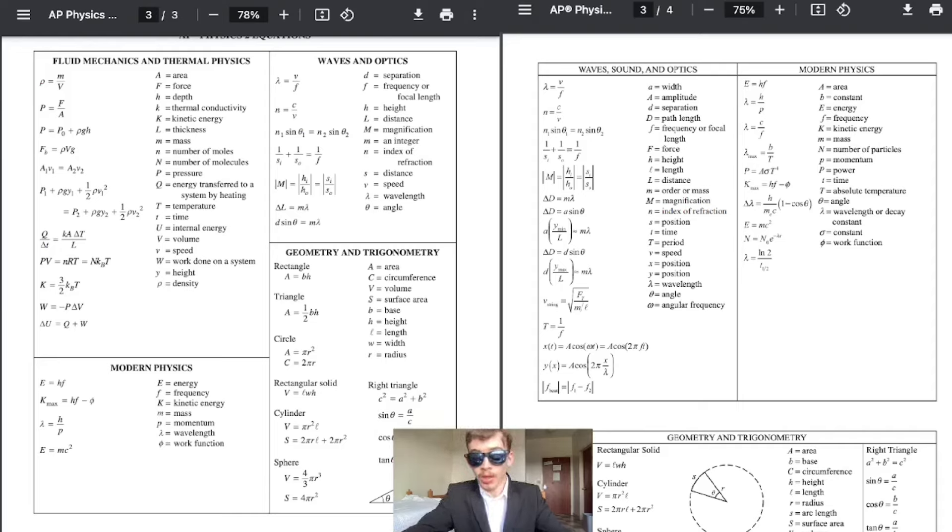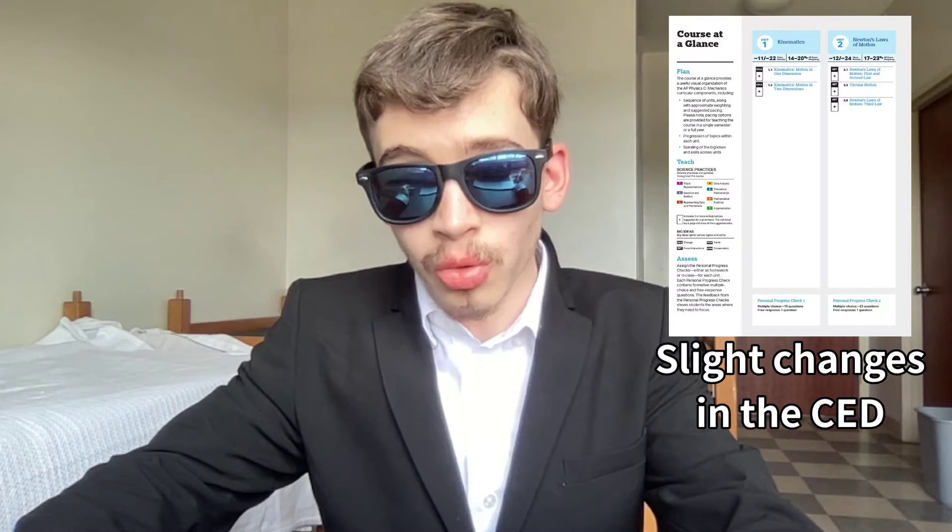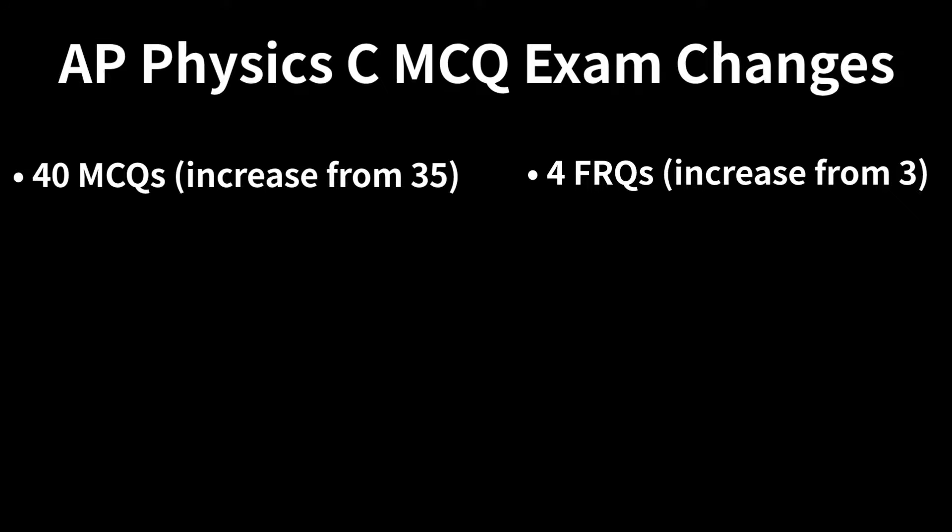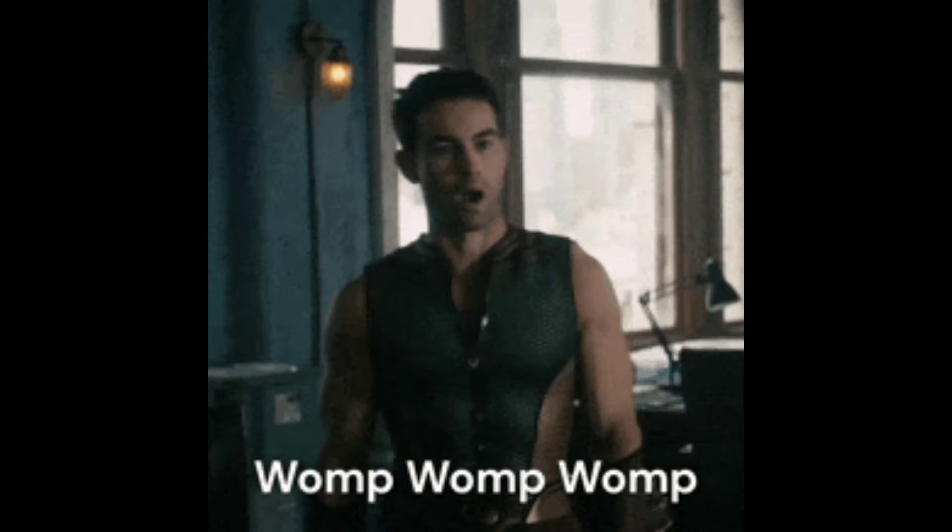Finally AP physics c mechanics and AP physics c electricity and magnetism. In terms of course changes both classes are simply receiving modification to language consistency and defining learning objectives and topics in the course and exam description CED. Now for exam updates and this is the most influential ones. Both exams will have an increase from 35 to 40 MCQs and from 3 to 4 FRQs. Womp womp womp.